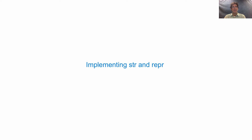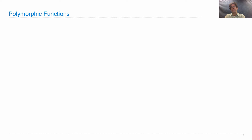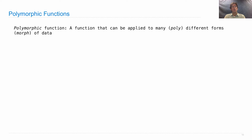Let's talk about how we would implement the str function and the repr function. Because those are generic functions, they can take in any kind of object and they return something reasonable — either a human or Python interpretable string. These are called polymorphic functions. A polymorphic function is a function that can be applied to many different forms — 'poly' is the root for many, 'morph' is the root for form — of data.